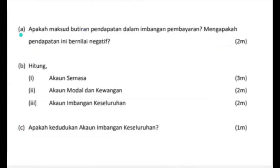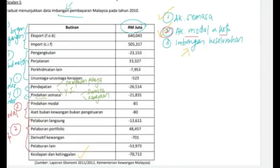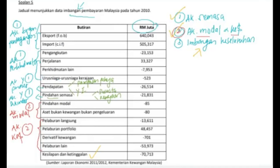Soalan A: Apakah maksud putiran pendapatan dalam imbangan pembayaran? Jadi anda nampak ya — pendapatan di sini, inilah yang ditanya oleh soalan. Tadi pun sudah jelaskan — akaun pendapatan ini sebenarnya di bawah akaun pendapatan prima, di mana dia terdiri daripada pampasan pekerja dan juga pendapatan pelaburan.